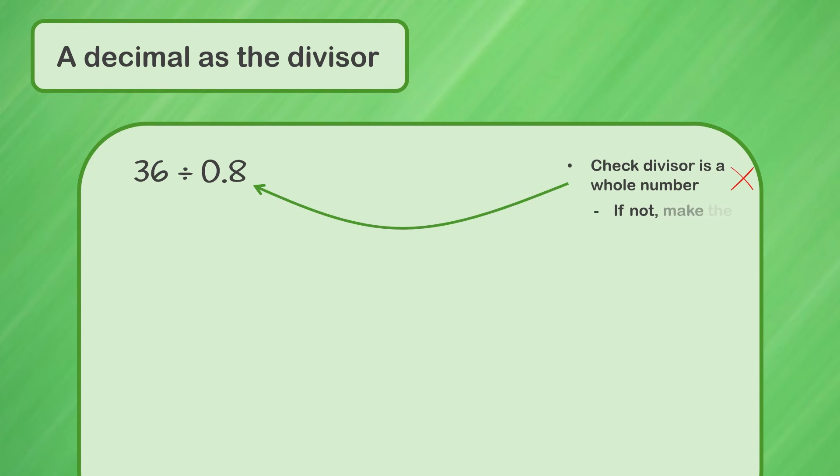This means we must make our divisor a whole number. In the case of this problem we can do that by moving the decimal point one place to the right, like this. Doing so turns 8 tenths into 8. Now our divisor is a whole number.